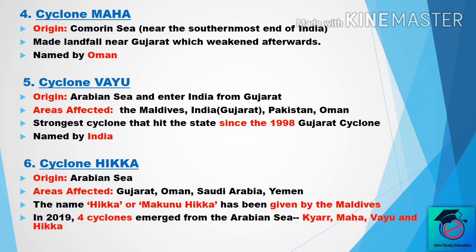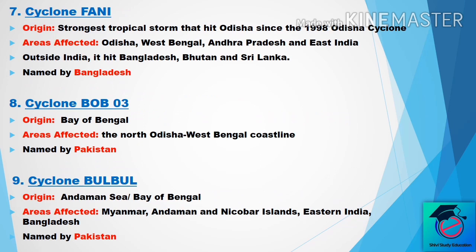The seventh one is Cyclone Fani. It originated from the Bay of Bengal near Odisha. This is also the strongest tropical storm to hit Odisha since the 1998 Odisha Cyclone. Areas affected are Odisha, West Bengal, Andhra Pradesh, and eastern India. Outside India, it also hit Bangladesh, Bhutan, and Sri Lanka. The name Fani was given by Bangladesh.